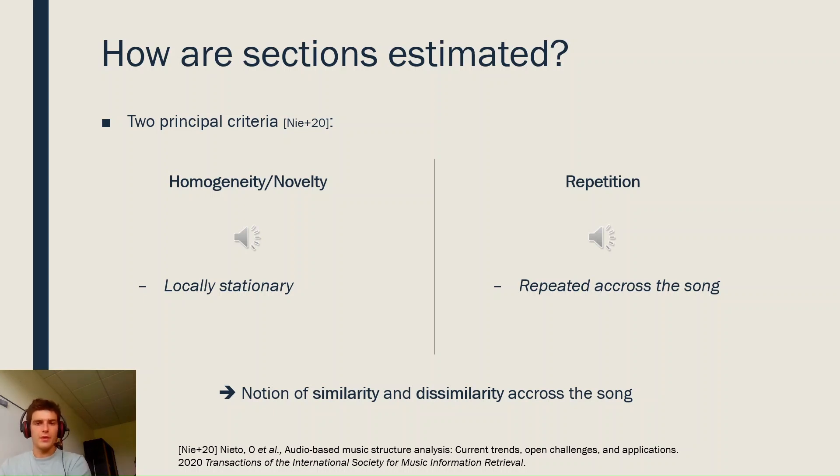The second criteria is the repetition criteria. It considers that a segment is repeated across the song. Thus, it may be heterogeneous but it has to be repeated through the song. This may be explained by this example. Well, the chorus is heterogeneous in itself but is repeating across the song, which indicates that this is indeed a section.